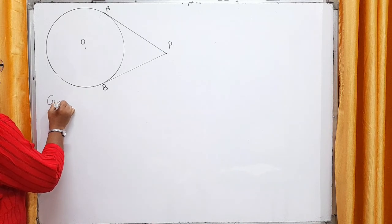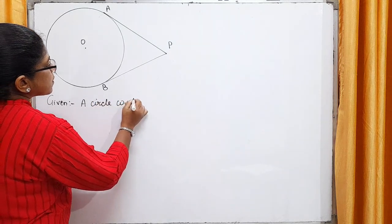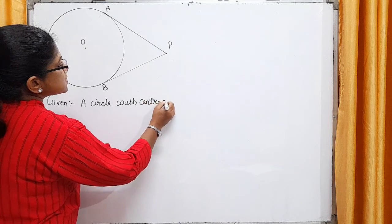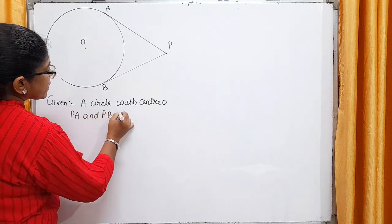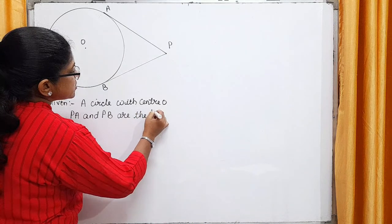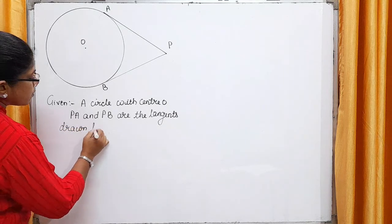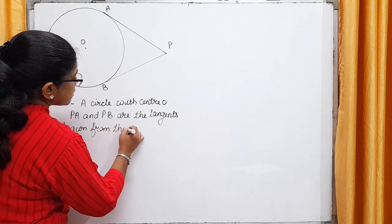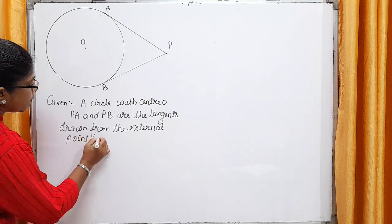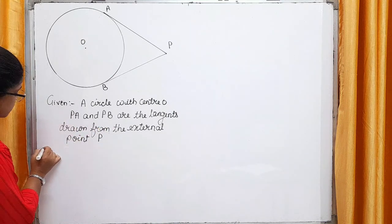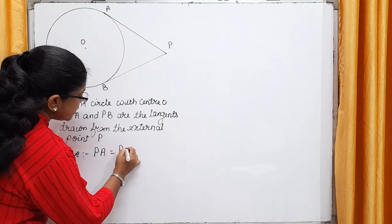Let's write first what is the given information. We have one circle with center O. Then, PA and PB are the tangents drawn from the external point P. We have to prove that this PA is equal to PB.